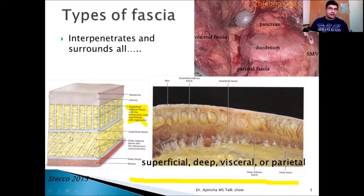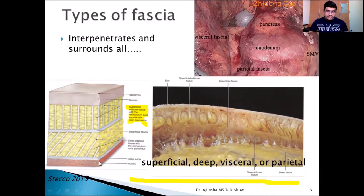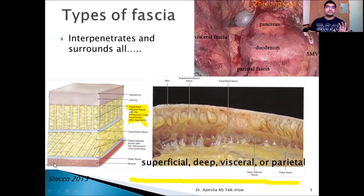After the superficial fascia, you can see yellow-colored fat deposition called the deep adipose tissue, or DAT. After that you can see the deep fascia, and after the deep fascia you can see the muscles, which also contain the epimysium.